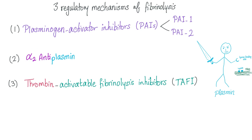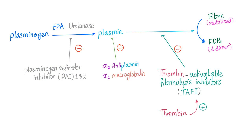Because fibrinolysis is a very important step, we should regulate it — because power corrupts and absolute power corrupts absolutely. We have three regulators: plasminogen activator inhibitors, alpha-2 antiplasmin, and thrombin activatable fibrinolysis inhibitor. PAI inhibits TPA and urokinase. Who inhibits plasmin? Alpha-2 antiplasmin and alpha-2 macroglobulin. Then plasmin degrades fibrin into fibrin degradation products and stabilized fibrin into D-dimer. Who inhibits that step? Thrombin activatable fibrinolysis inhibitor.